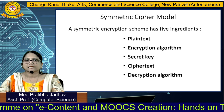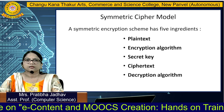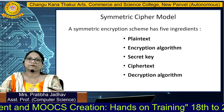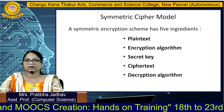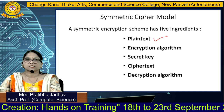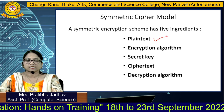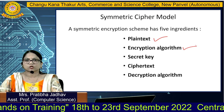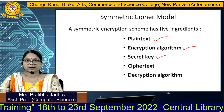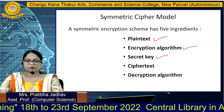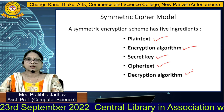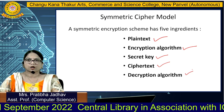In the symmetric cipher model, there are five ingredients needed for encryption and decryption: plaintext, encryption algorithm, secret key, ciphertext, and decryption algorithm.